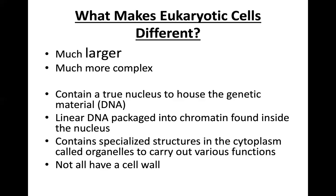So for the prokaryotic cell, since the eukaryotic is much larger, the prokaryotic is smaller. Since the eukaryotic is much more complex, the prokaryotic is simpler. Since the eukaryotic contains a true nucleus, the prokaryotic does not have a true nucleus. Since the eukaryotic has linear DNA packaged into chromatin, the prokaryotic has DNA but it is not packaged into chromatin. Since the eukaryotic has specialized organelles, the prokaryotic does not have these organelles. And since not all eukaryotic cells have a cell wall, what about prokaryotic cells?